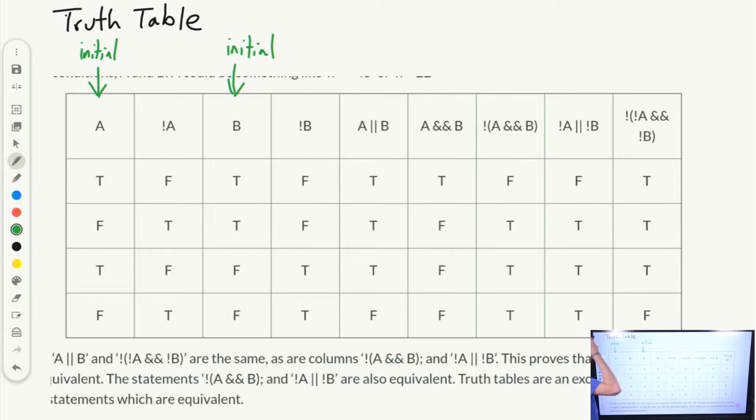So if we set A to TRUE, FALSE, TRUE, and FALSE, and NOT A, of course, would flip that, right? NOT TRUE is FALSE, and NOT FALSE is TRUE. And same thing with B. So we're going to see what the combinations of these two and also the NOTs will do in our truth table.